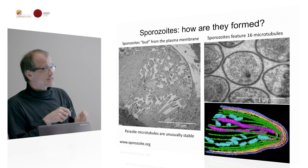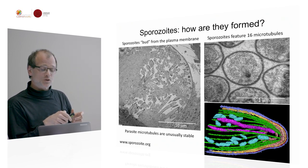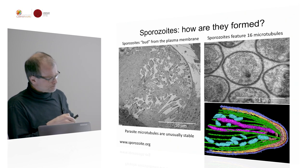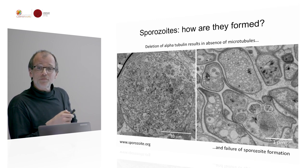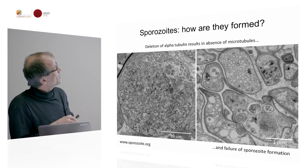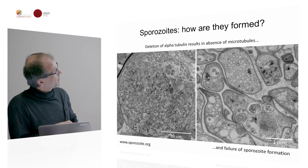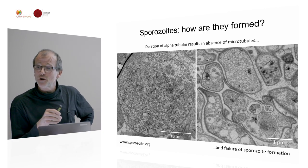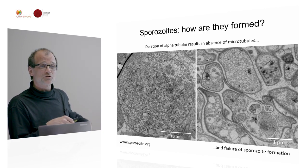We finally succeeded in actually manipulating these microtubules, because they're so stable that you can't depolymerize them with the classic microtubule depolymerizing agents. When we delete one of the alpha-tubulins that are in the parasite genome, you see that there are not many parasites formed. They are actually very weird structures that don't show any microtubules — which makes sense since we knocked them out — but they also don't show very many other recognizable structures.